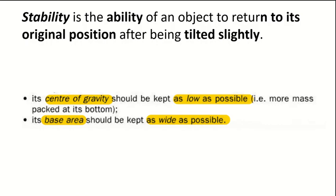So what is stability? Stability is basically just the ability of an object to return to its original position after being tilted slightly. And there are two main factors that increase the stability: the center of gravity needs to be kept as low as possible, and the second one is the base area must be as wide as possible.